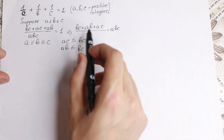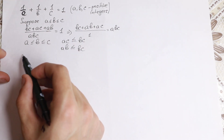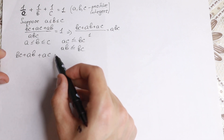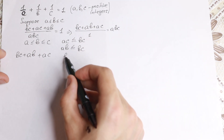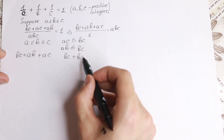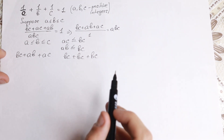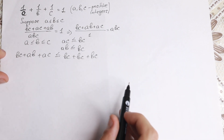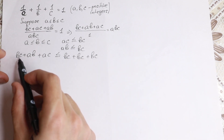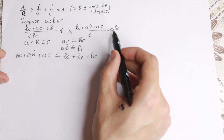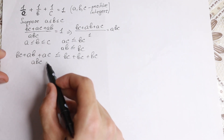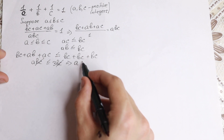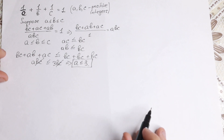So we have abc = bc + ab + ac. Replacing ab and ac each with bc since those are smaller, we get abc ≤ 3bc. Cancelling bc, we find that a ≤ 3. So a has only three possible values: 1, 2, and 3. We don't have 0 or 4, so we need to work with these three options.